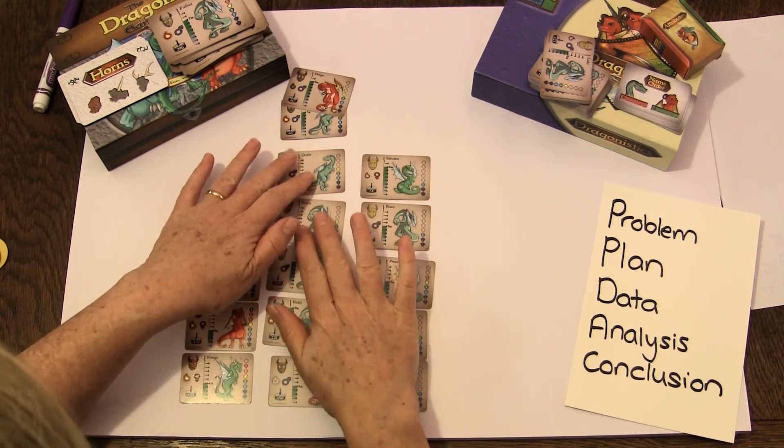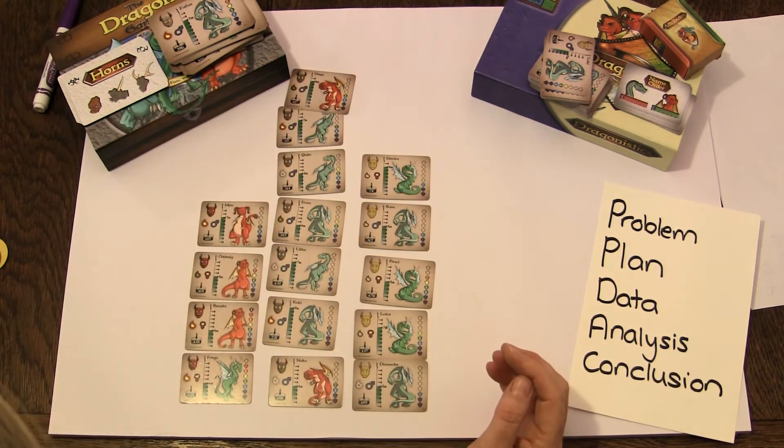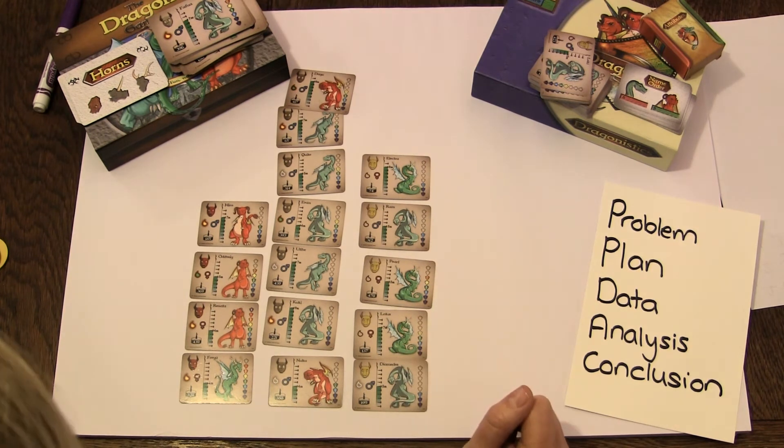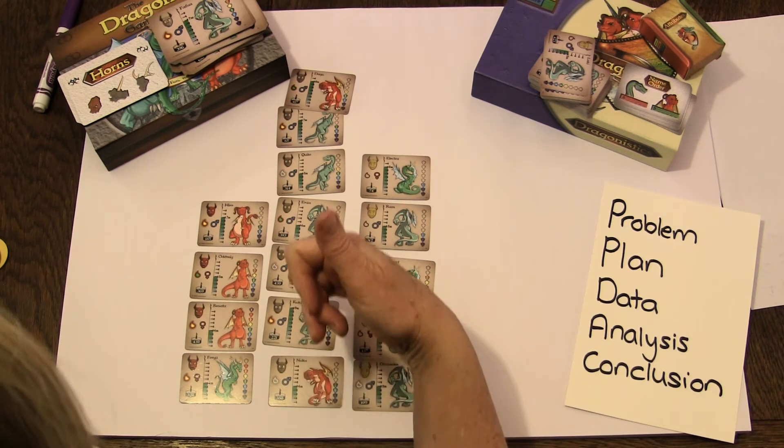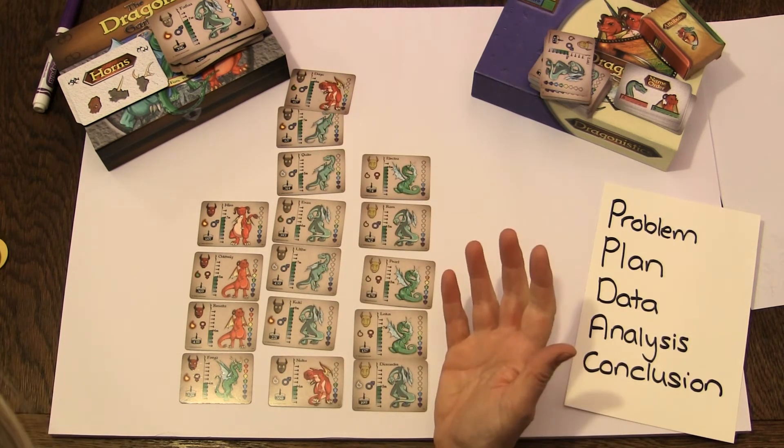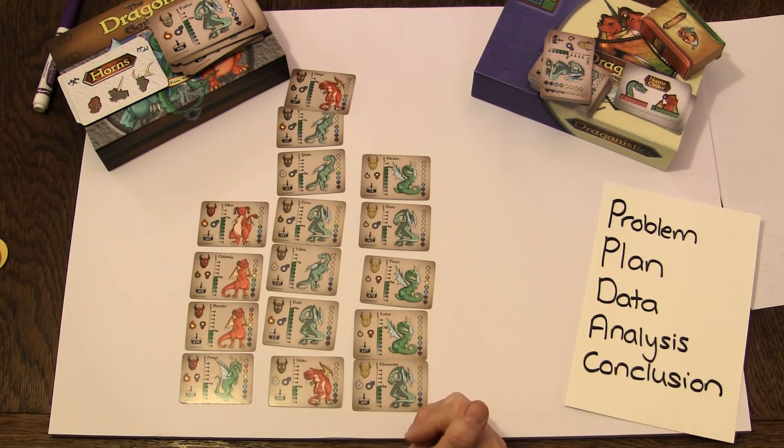as our conclusion, I have five friendly dragons. And we can also say, because we want to answer the problem we had in the first place, I have one, two, three, four, five, six. I have seven changeable dragons and four dangerous dragons.